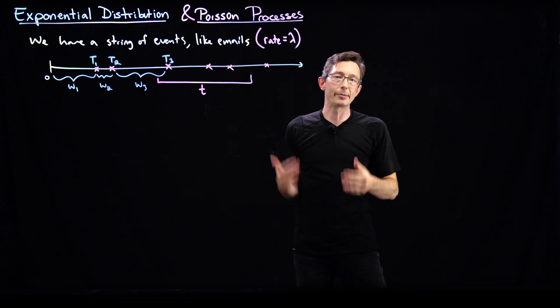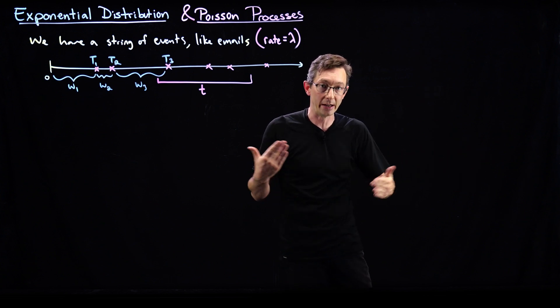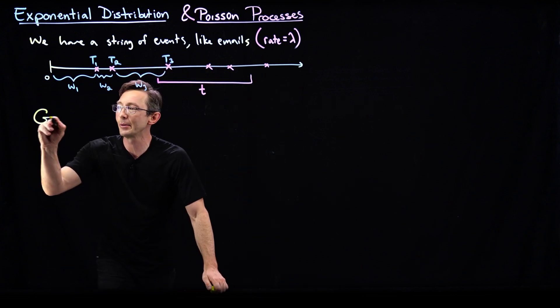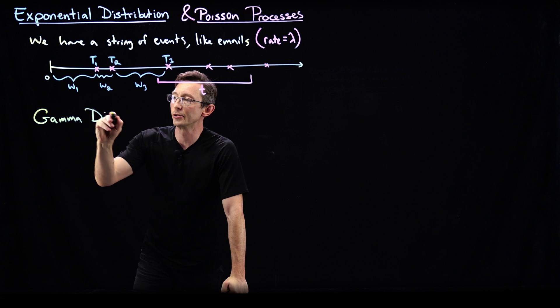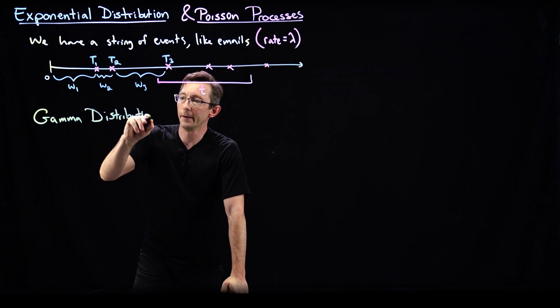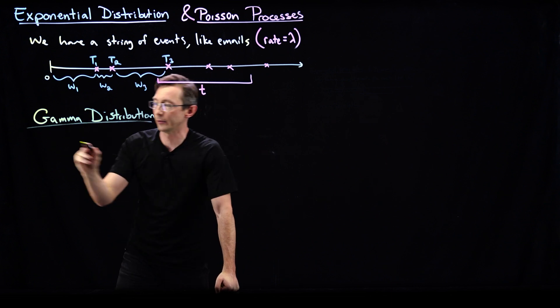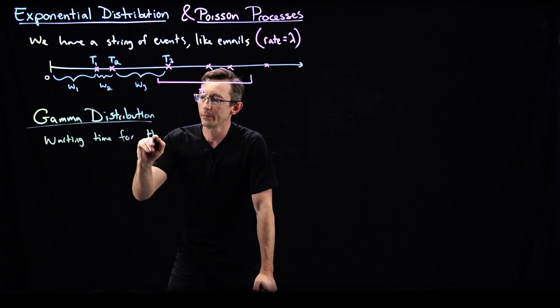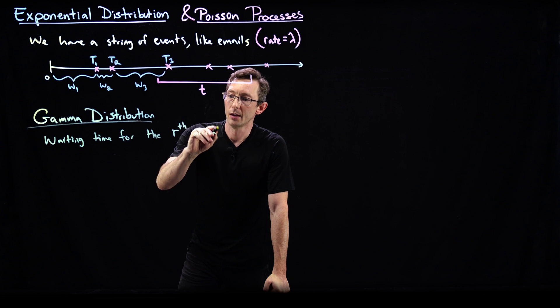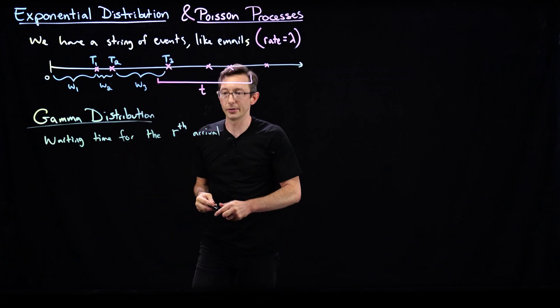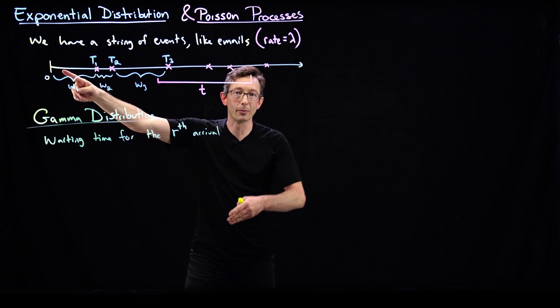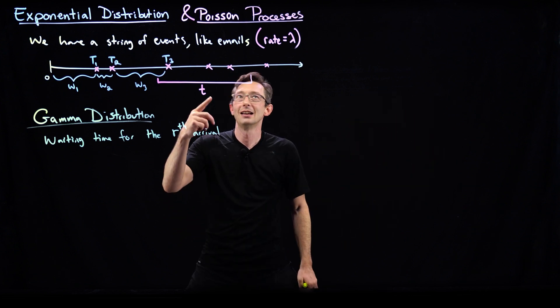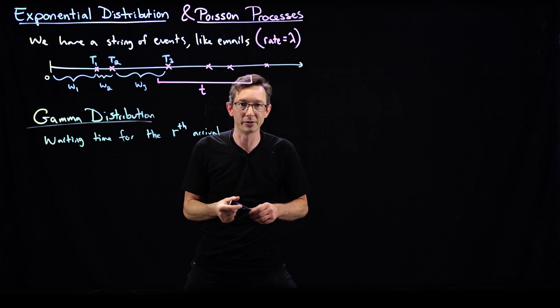There is a generalization of the exponential distribution. The exponential distribution gives me these waiting times between events. There is something called a gamma distribution. A gamma distribution which essentially gives me the waiting time for the rth arrival. The waiting time for the rth arrival is going to be a gamma distributed random variable. So I might know the waiting time for the next email is going to be exponentially distributed, but how much time do I have to wait for the 10th email from now? It's not just necessarily 10 times my exponential distribution. It doesn't work like that.